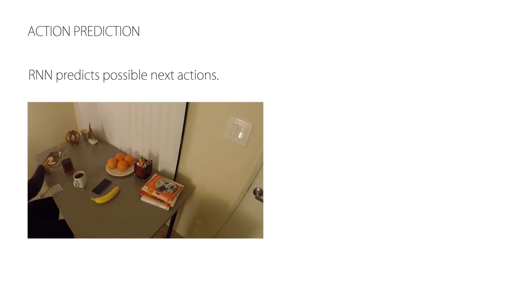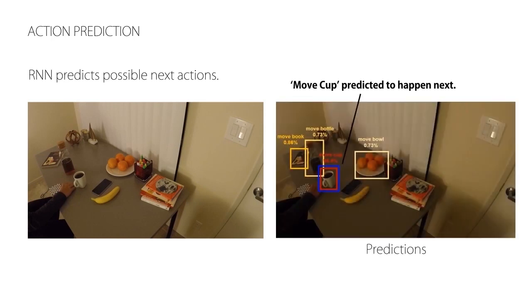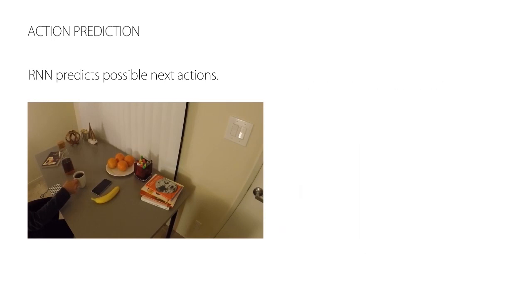Given the scene state, the action plot RNN allows us to predict the next plausible actions of a scene. Here we show how this can be used to anticipate interactions with objects a few frames in the future.